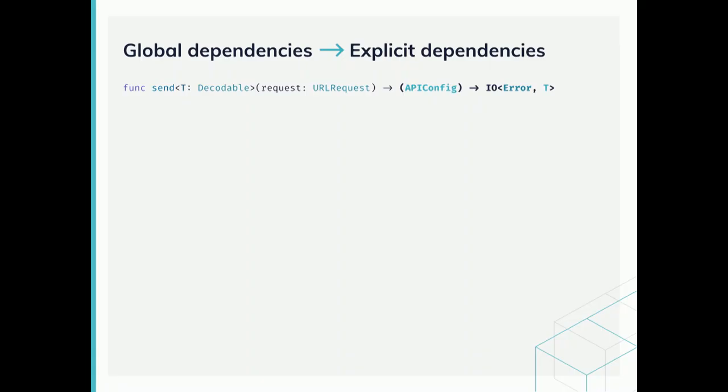Instead of using global dependencies or instantiating them inside our send function, we can make them explicit and pass them as parameters to the function that we can control during testing. We can even go further and group them into some sort of API configuration object, where we can decide which concrete implementation for these dependencies we provide and make the rest of our code agnostic about this decision. We can split the parameter list into the parameters we need to build our network request and the dependencies we need to run.